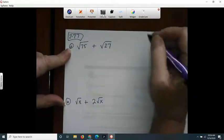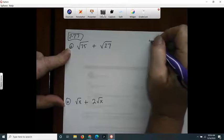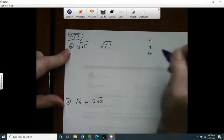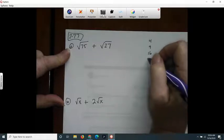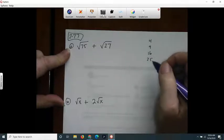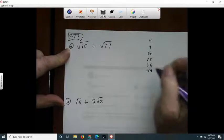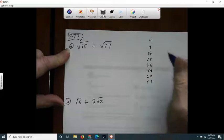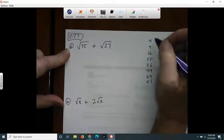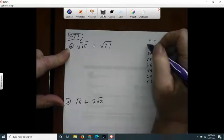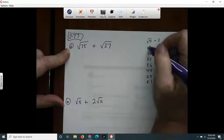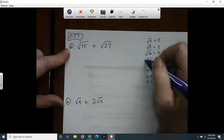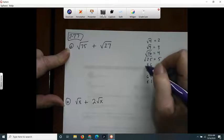2 squared is 4, 3 squared is 9, 4 squared is 16, 5 squared is 25, 6 squared is 36, 7 squared is 49, 8 squared is 64, 9 squared is 81. These are the perfect squares, so the square root of 4 is 2, square root of 9 is 3, like this. These are what I call perfect squares.